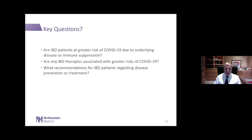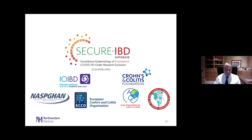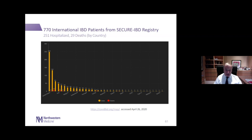At the beginning of the pandemic, a variety of international IBD organizations — including the International Organization of IBD, the Crohn's and Colitis Foundation, and the pediatric, European, and Asian groups — came together to develop the SECURE-IBD database, accessible at covidibd.org. This international registry has 770 patients entered as of two days ago. Of these, 251 had been hospitalized and there were 29 deaths.